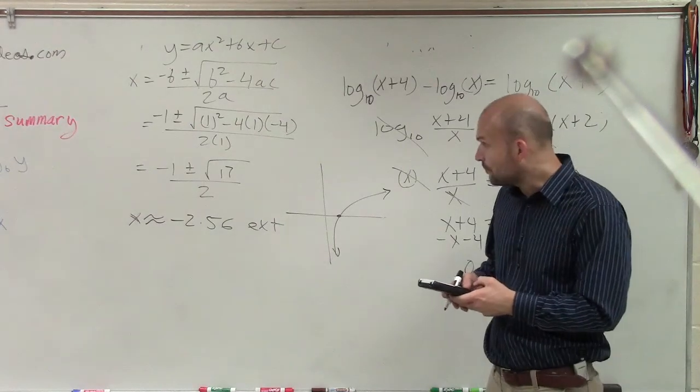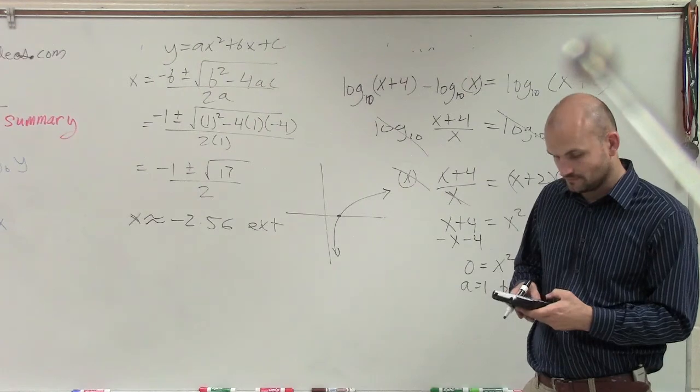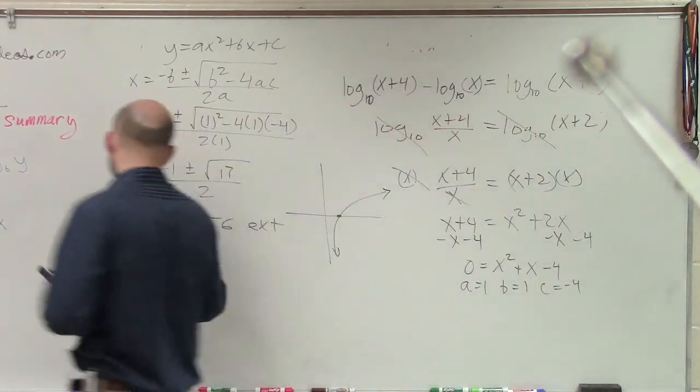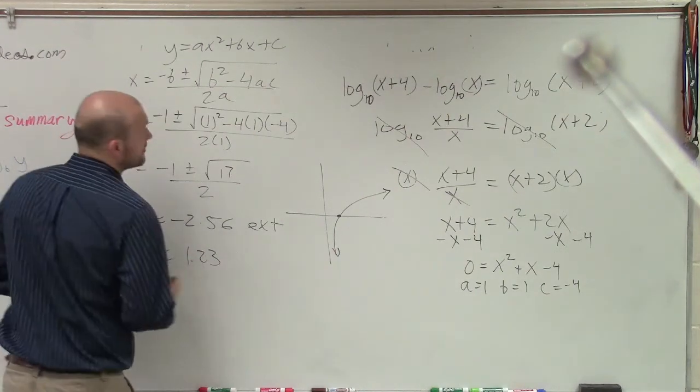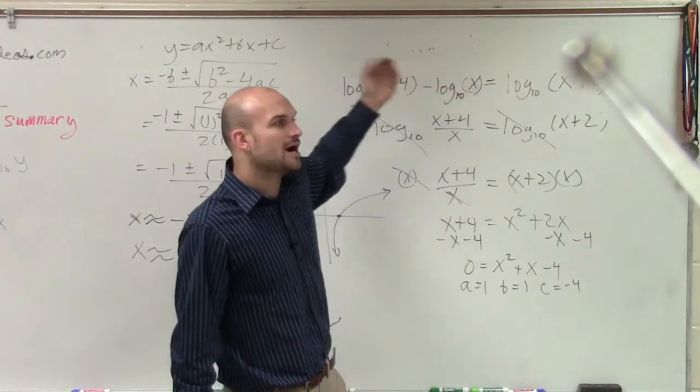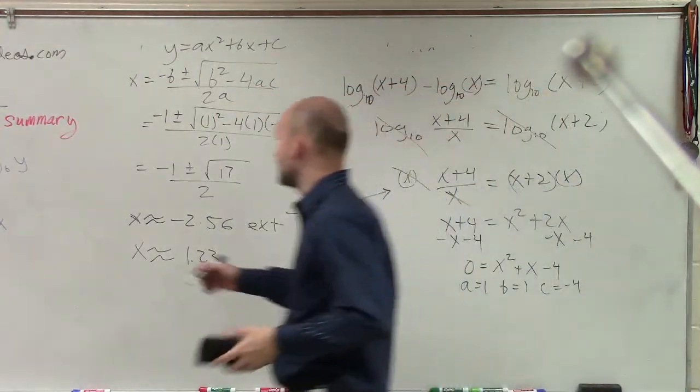However, if I do negative 1 plus the square root of 17, and I divide that by 2, I'm going to have an answer of x is approximately 1.23. And I notice, if I put in 1.23 in each one of these, I'm always going to have a positive value. Therefore, that is going to be my only solution.